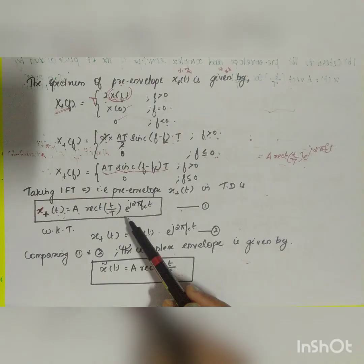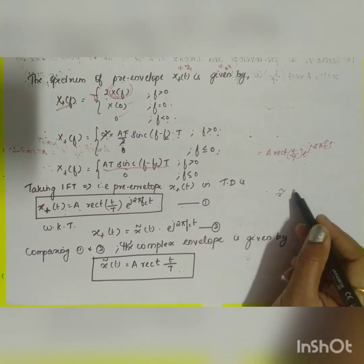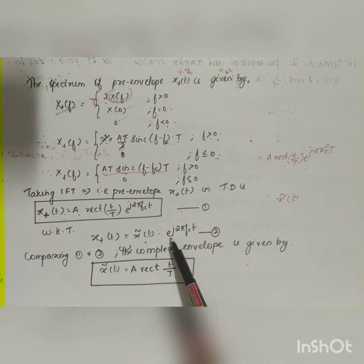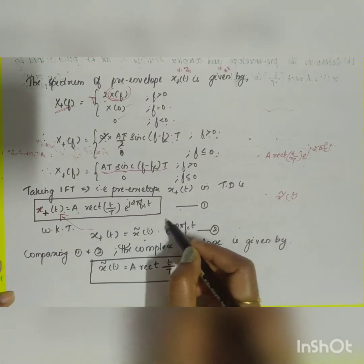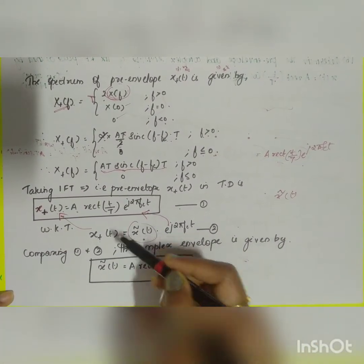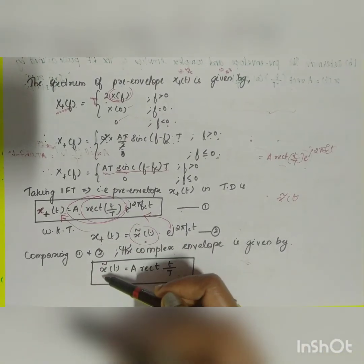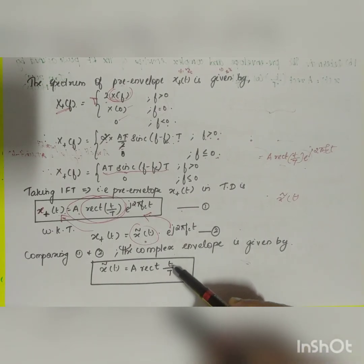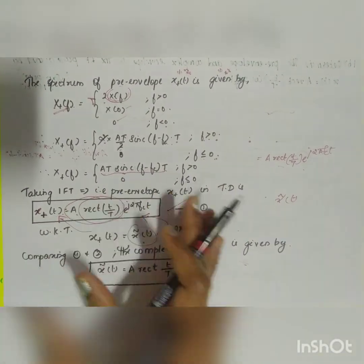Now we find the complex envelope x̃(t). The relationship between the pre-envelope and complex envelope is: x⁺(t) = x̃(t)·e^(j2π·fc·t). Since x⁺(t) = A·rect(t/T)·e^(j2π·fc·t), comparing both sides gives x̃(t) = A·rect(t/T). So the pre-envelope is A·rect(t/T)·e^(j2π·fc·t) and the complex envelope is A·rect(t/T).